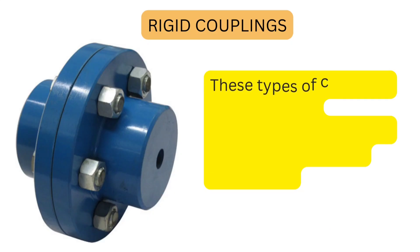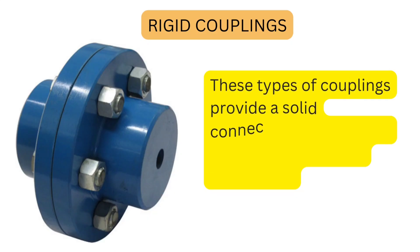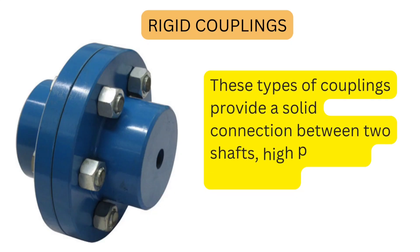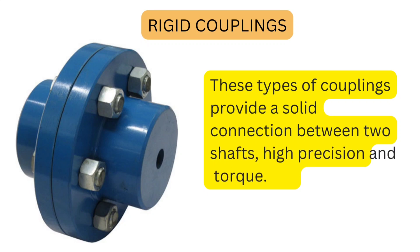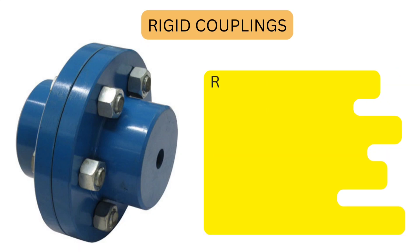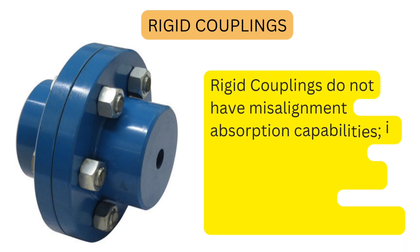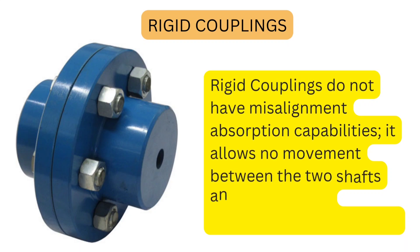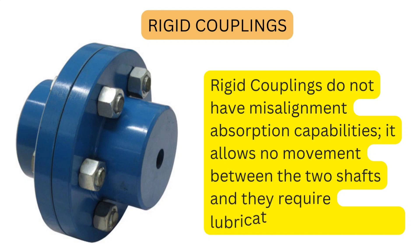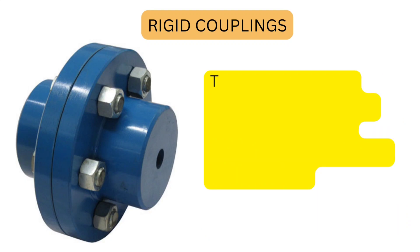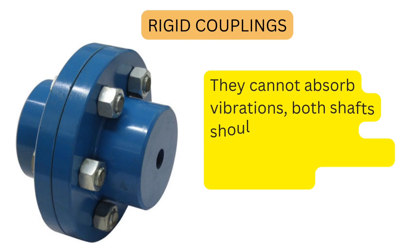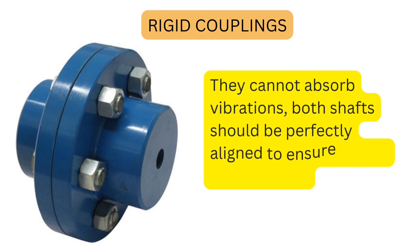Rigid couplings. These types of couplings provide a solid connection between two shafts, offering high precision and torque. Rigid couplings do not have misalignment absorption capabilities — they allow no movement between two shafts and require lubrication in many cases. They cannot absorb vibrations, so both shafts should be perfectly aligned to ensure good performance.